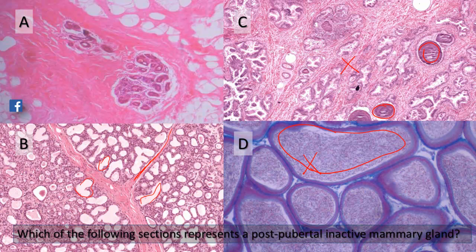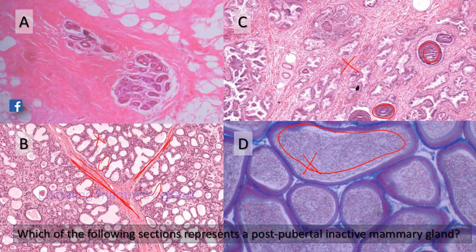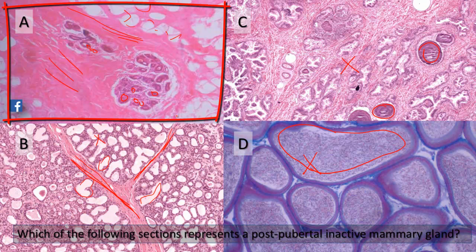In section B, you can see that the tissue is divided by connective tissue septa — some of them are thick, dividing the tissue into lobes, and others are thinner, dividing into lobules. So this is a breast, but it contains a lot of glandular tissue, making it an active breast. Section A, in contrast, mainly shows connective tissue with only ducts, no alveoli, and a lot of adipose tissue — so this is an inactive breast.